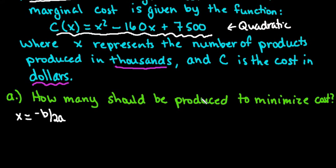The first question asks us how many should be produced to minimize the cost. This is actually talking about x, which is why I'm only finding the negative b over 2a. Remember that our b term is the number in front of our linear term. That's the negative 160 divided by 2 times my a term. And a is the value in front of x squared. In this case, since nothing is there, it's understood to be 1.